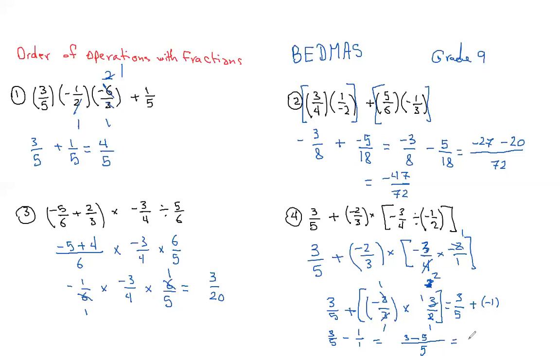And therefore 3 minus 5 is negative 2/5. So the final answer is negative 2/5.